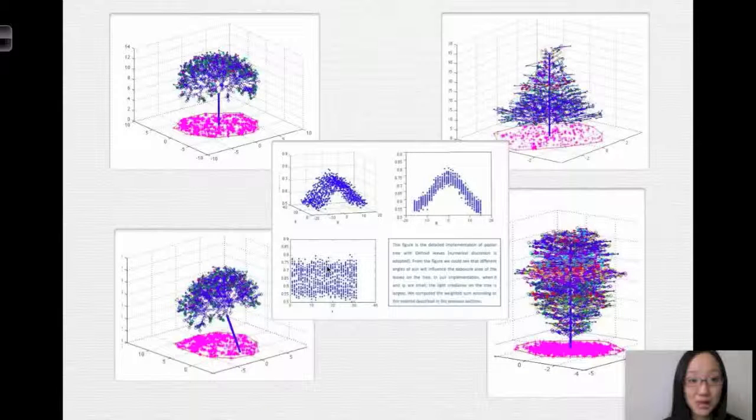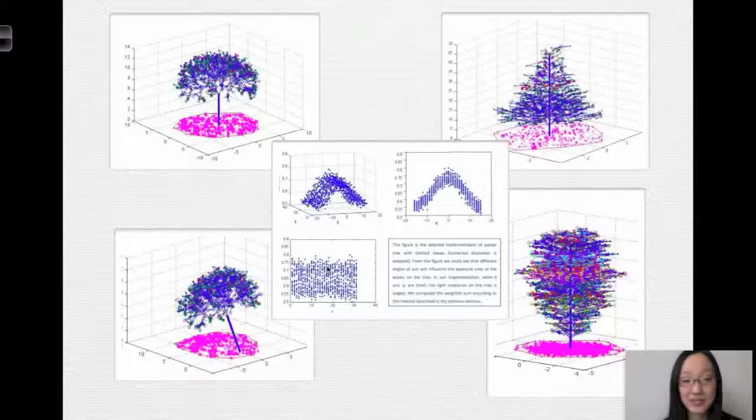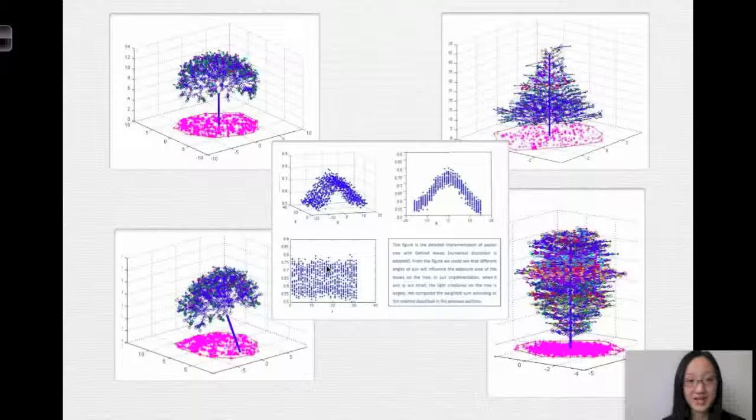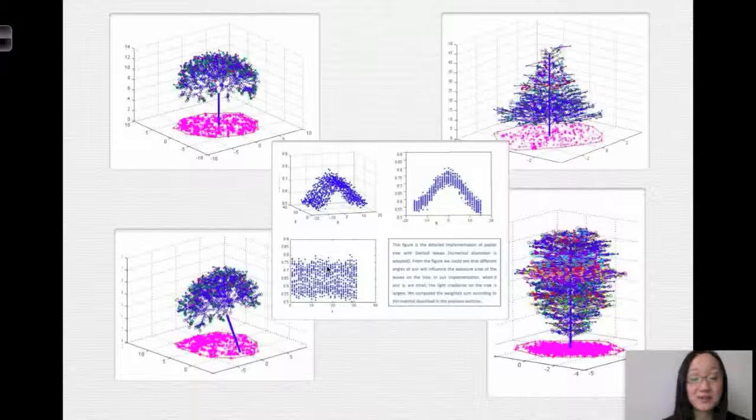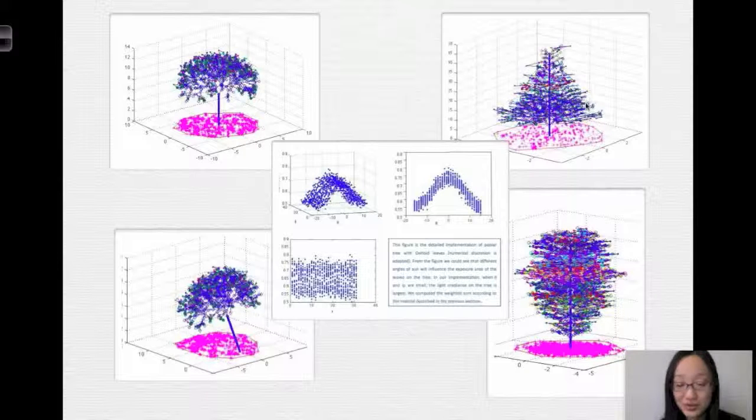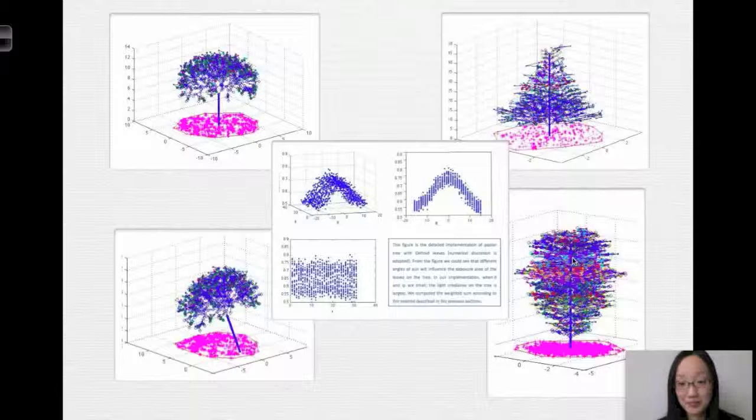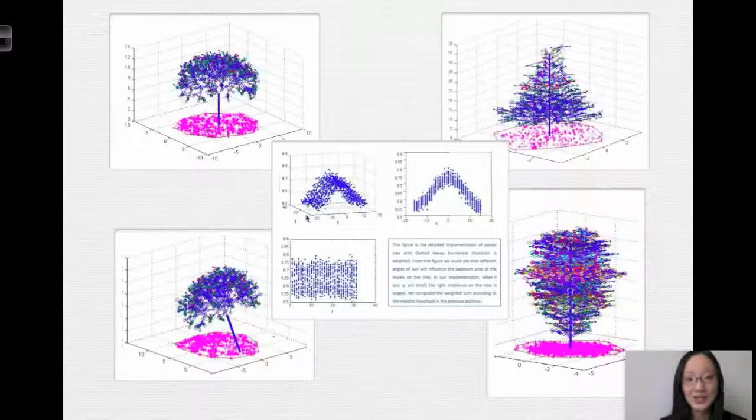Our whole model was simulated in MATLAB, and here is a snapshot of our results. Given different set of parameters, we can simulate different kinds of trees. For example, here we have a normal tree and a crooked tree. And here we have a pine tree, which is commonly used for Christmas trees. And we have a poplar tree, which is commonly seen in the northwestern part of China. And in the middle, this is some data analysis that we performed.